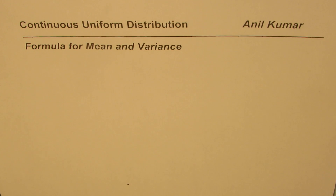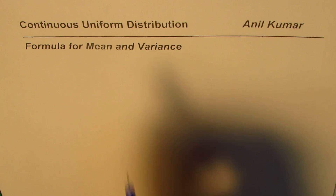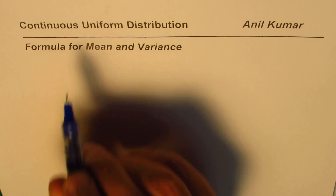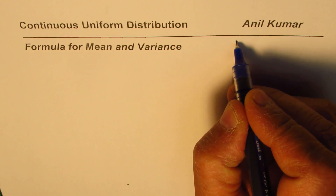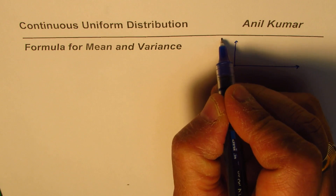I'm Anil Kumar and in this video we'll derive a formula for variance in continuous uniform distribution. We'll apply the techniques learned in calculus, basically integral calculus, and then derive the formula. In one of our previous videos we have already derived the formula for mean, but let's start by defining our function.